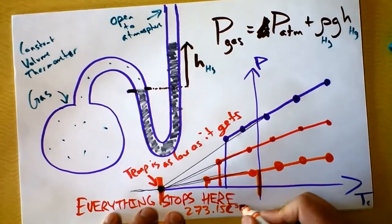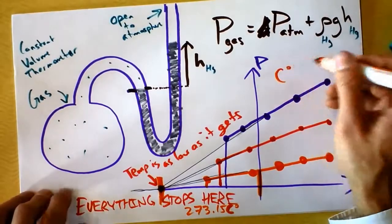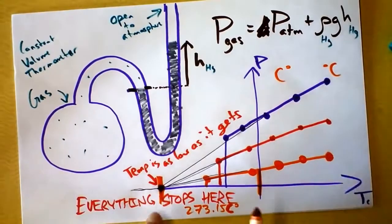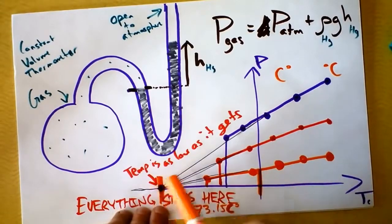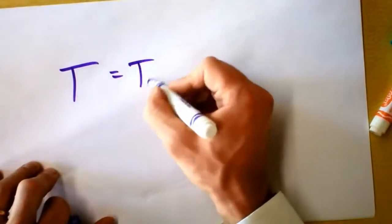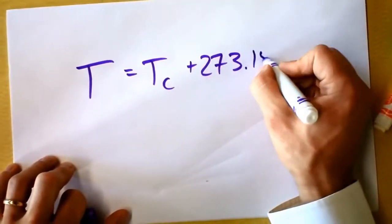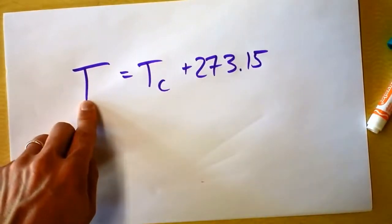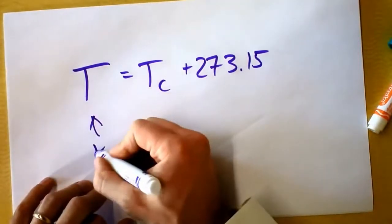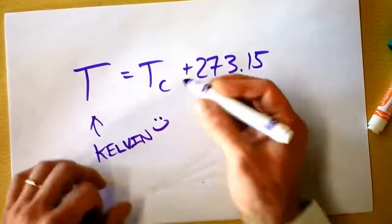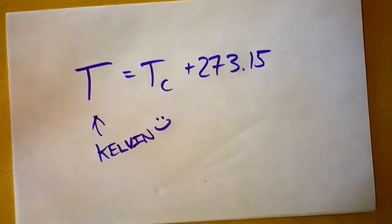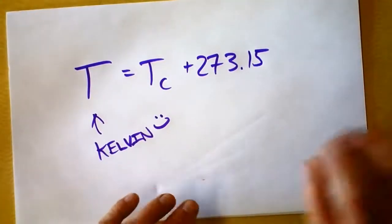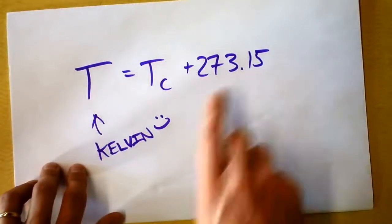Pressure comes from motion, so at this location everything stops. You could say that the temperature is as low as it gets — absolutely low. And between zero Celsius and that point is 273.15 Celsius degrees. Note the difference: 'Celsius degrees' refers to a temperature change, while 'degrees Celsius' refers to a temperature. So we define the Kelvin scale: temperature in Kelvin equals temperature in Celsius plus 273.15. That's Kelvin temperature — real temperature. That's the temperature that physicists are interested in, and it's not going to have a subscript because it's real.